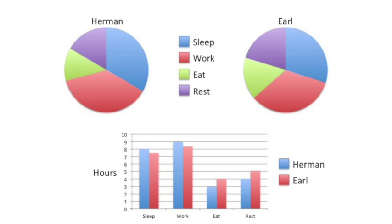Here we see that Herman sleeps about 30 minutes longer than Earl. We also see that Herman works about 40 minutes longer than Earl. Earl eats for an hour longer than Herman, and Earl also rests an hour longer than Herman. This is why I like bar charts more than pie charts.